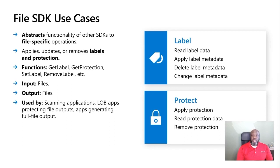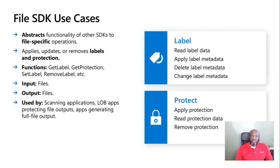Let's talk about the individual components of the MIP SDK and some use cases of how you can use each in your own application to leverage labeling and protection services. The File SDK is an abstraction of the functionality of the Policy and Protection SDK. Some actions you can take include update, apply, and remove labels from supported file types. Functions include get protection, get label, set label, and remove label. The input and output of the File SDK will always be a file — you pass in a file and you should expect a file in return. A use case includes a line of business app that is responsible for scanning applications for labels.